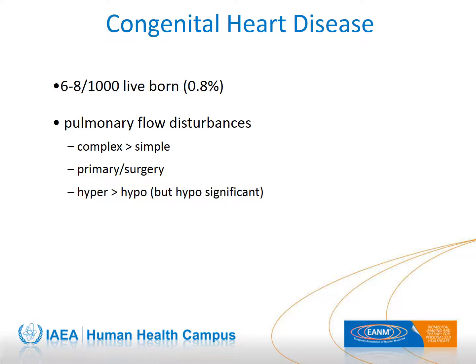Congenital heart defects occur in around 1% of live births. The most frequent complex malformations are often seen as pulmonary flow disturbances. These malformations can be caused due to the disease itself or due to surgical intervention in the pulmonary arteries. Even if hyperperfusion is the predominant case, lung hypoperfusion is certainly not rare in congenital heart defects.